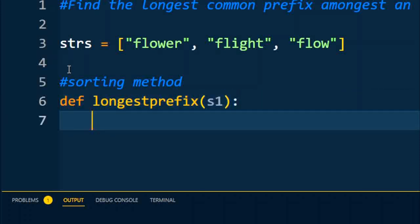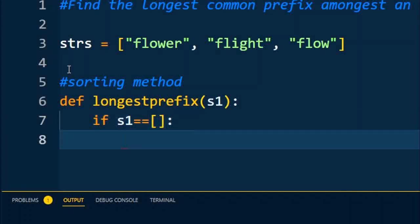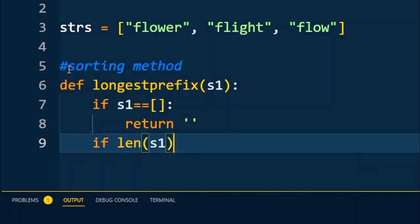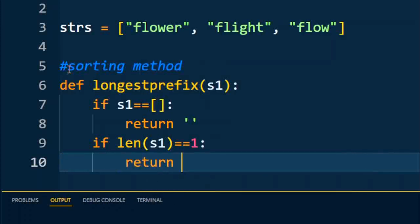One by one we'll take the cases. In the first case, if my given string is empty which won't have any characters, then it will return null. After that, if the length of the string is equal to 1, then I am going to return that character, s1[0].